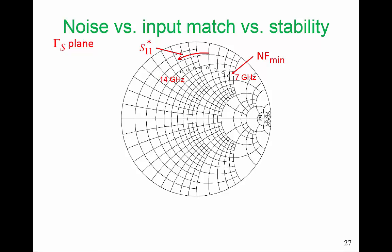Previously, we looked at designing the input matching network for maximum power transfer just looking at S11. And so we have S11 conjugate. Then we had NFmin for the minimum noise figure. And if we superimpose stability, so I'm going to superimpose stability now,